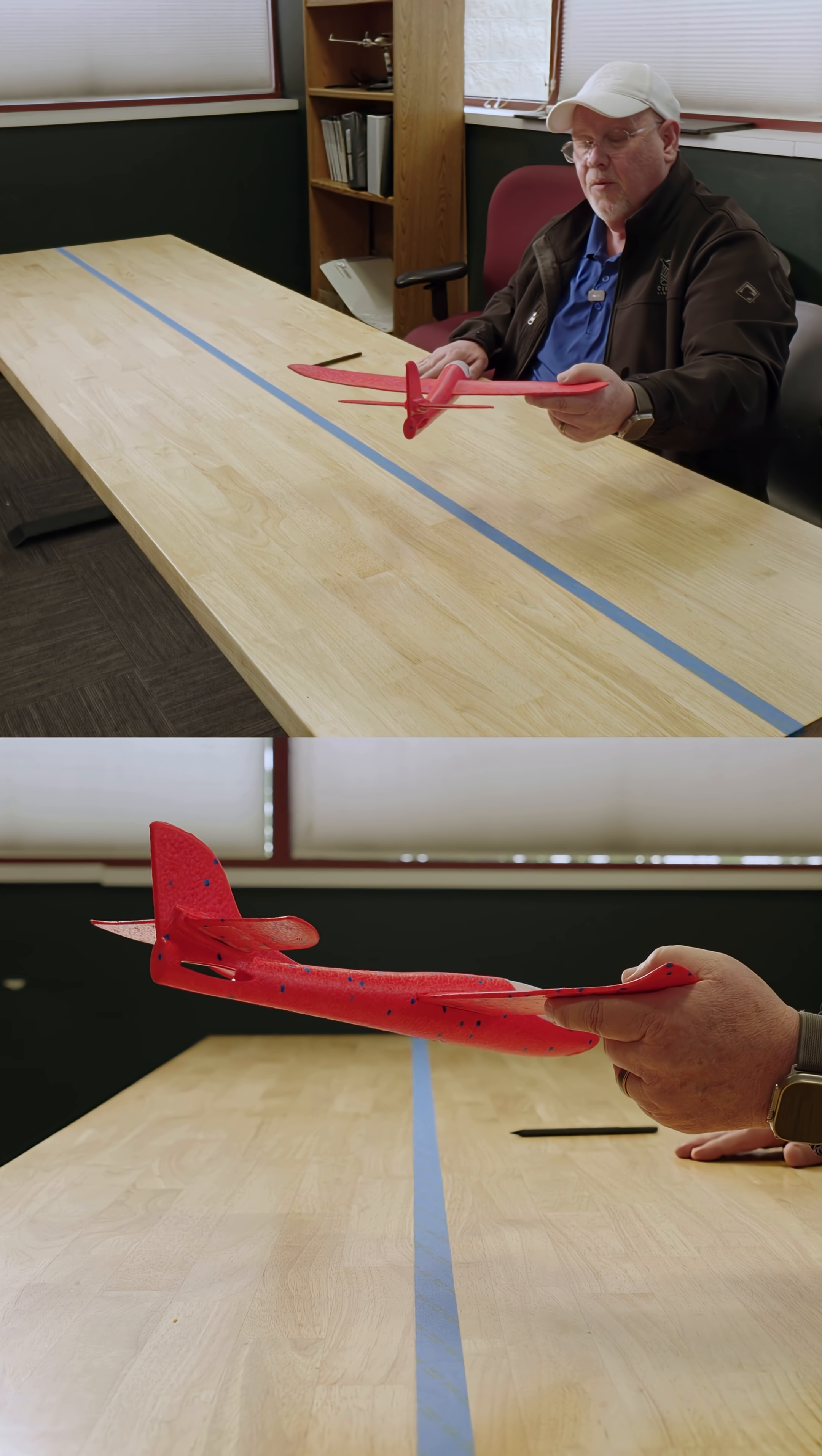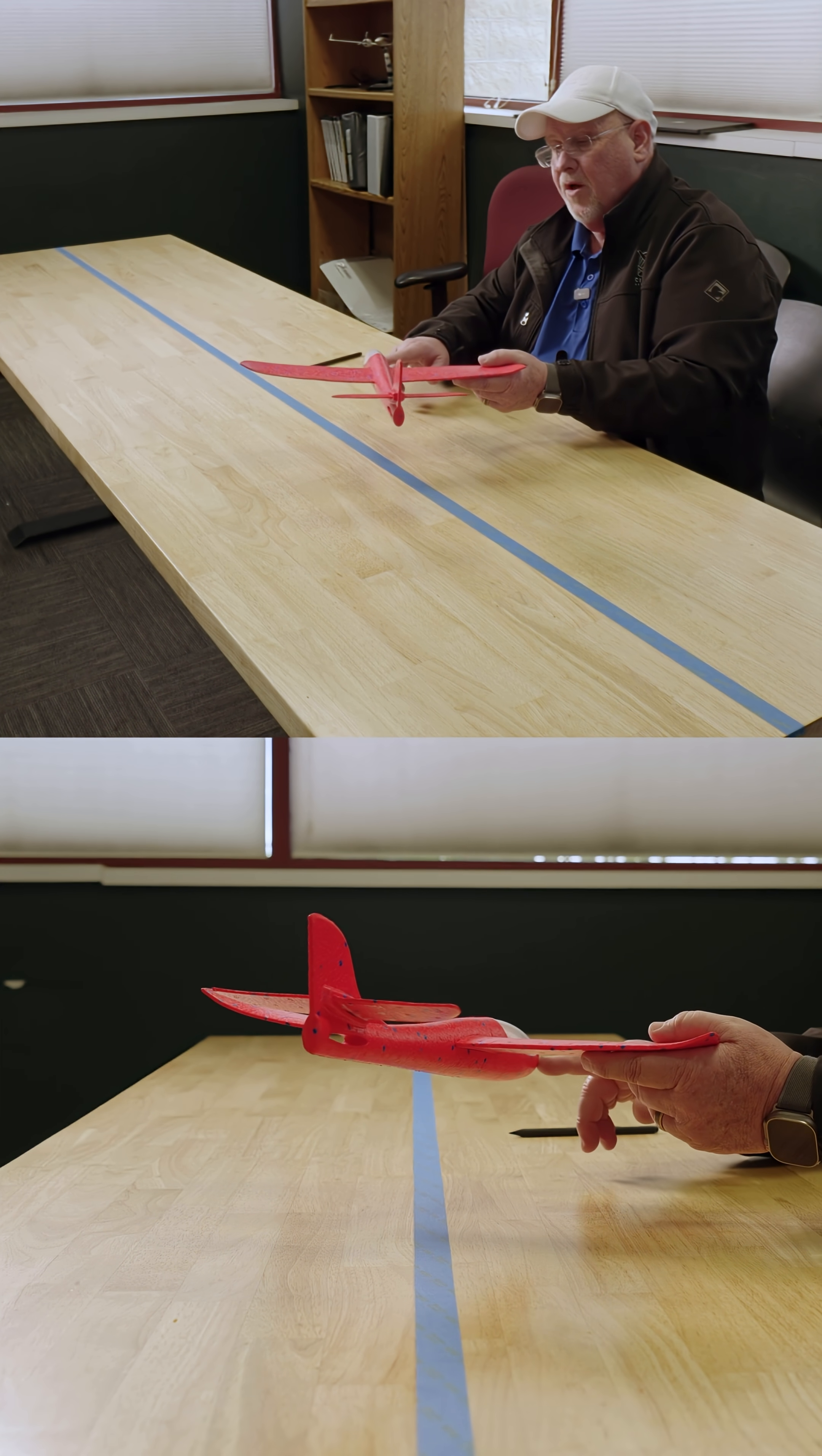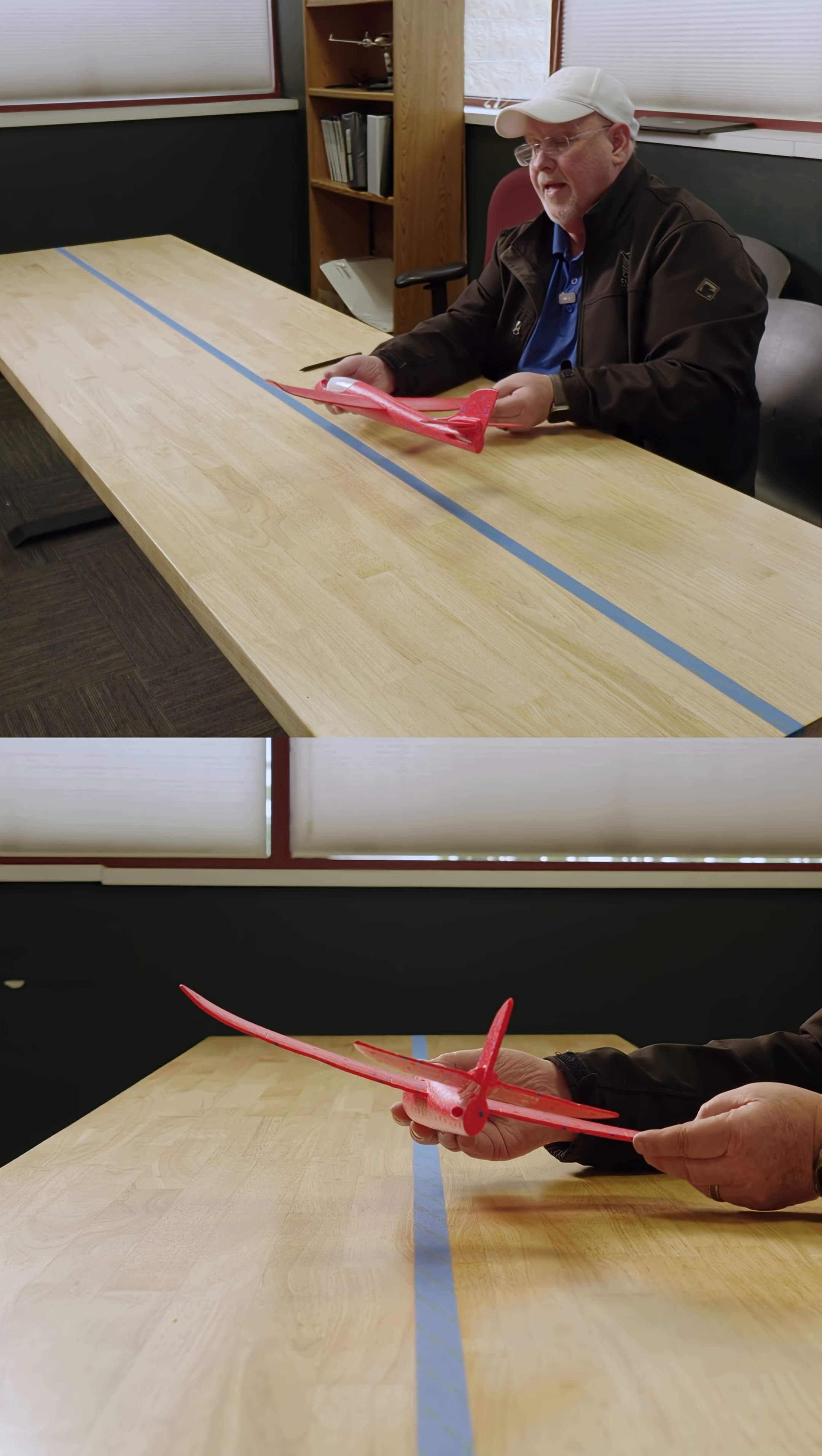We're crabbing down final, but we can't land like this because we're going to break things. We don't want to side load the airplane, so we put in left rudder. As we put in left rudder, we align the longitudinal axis, and now we have to put in our right wing down a little bit.